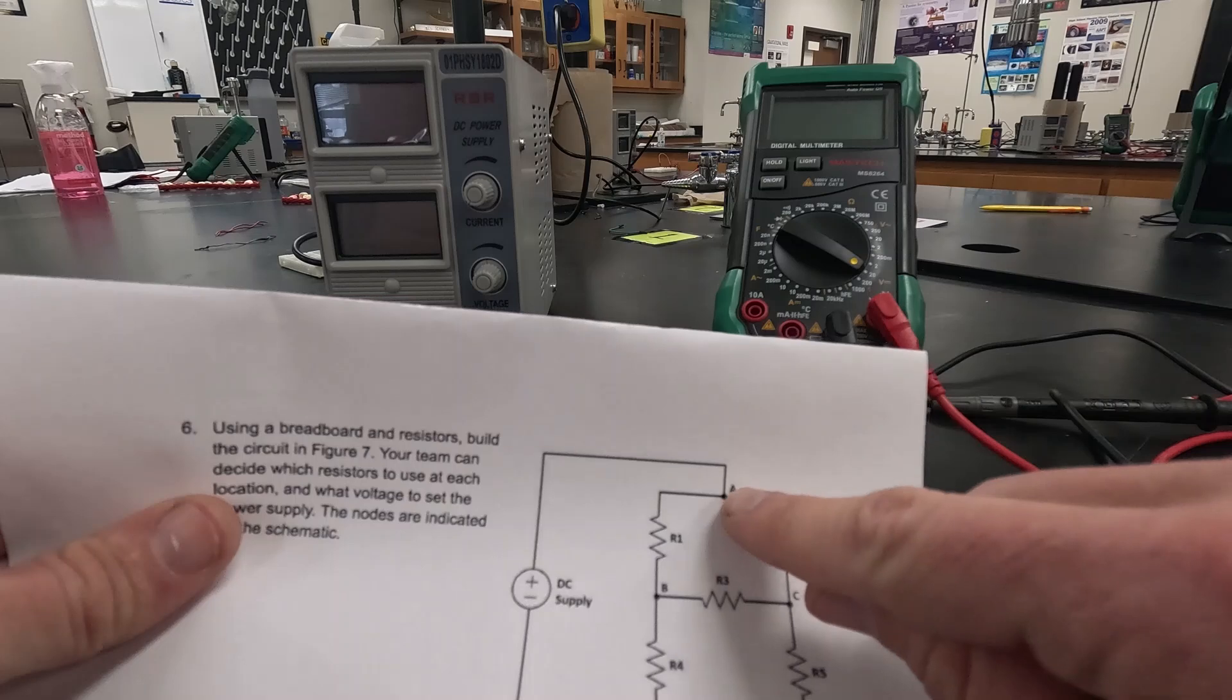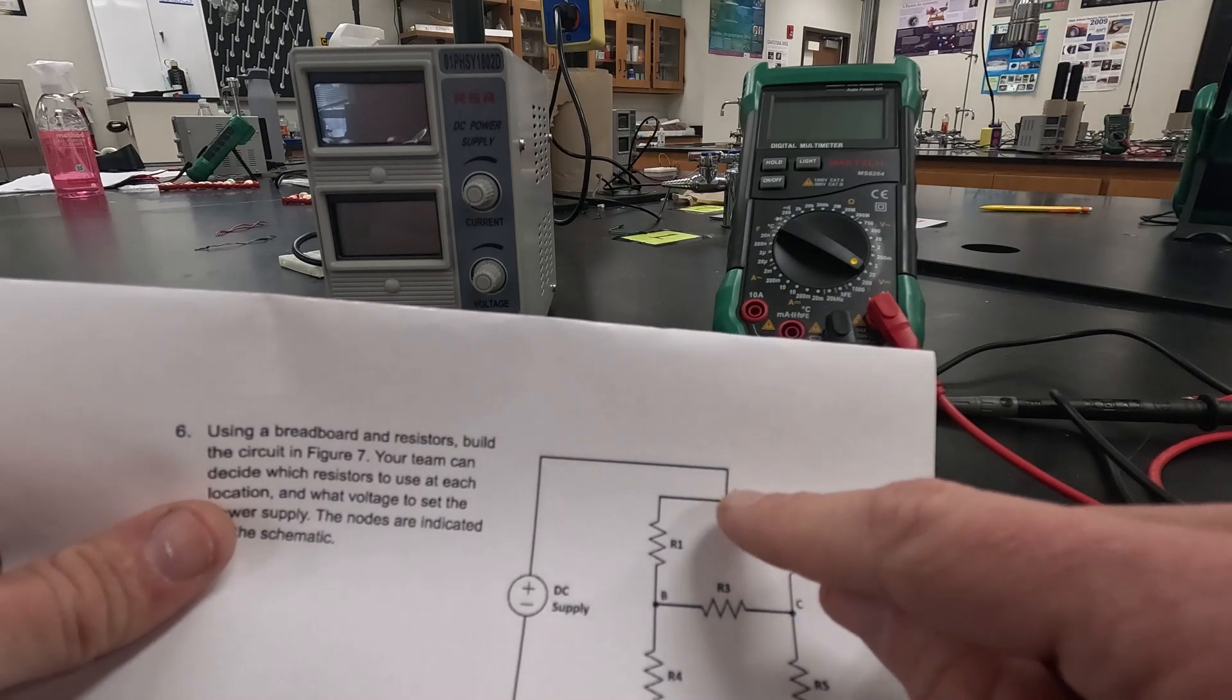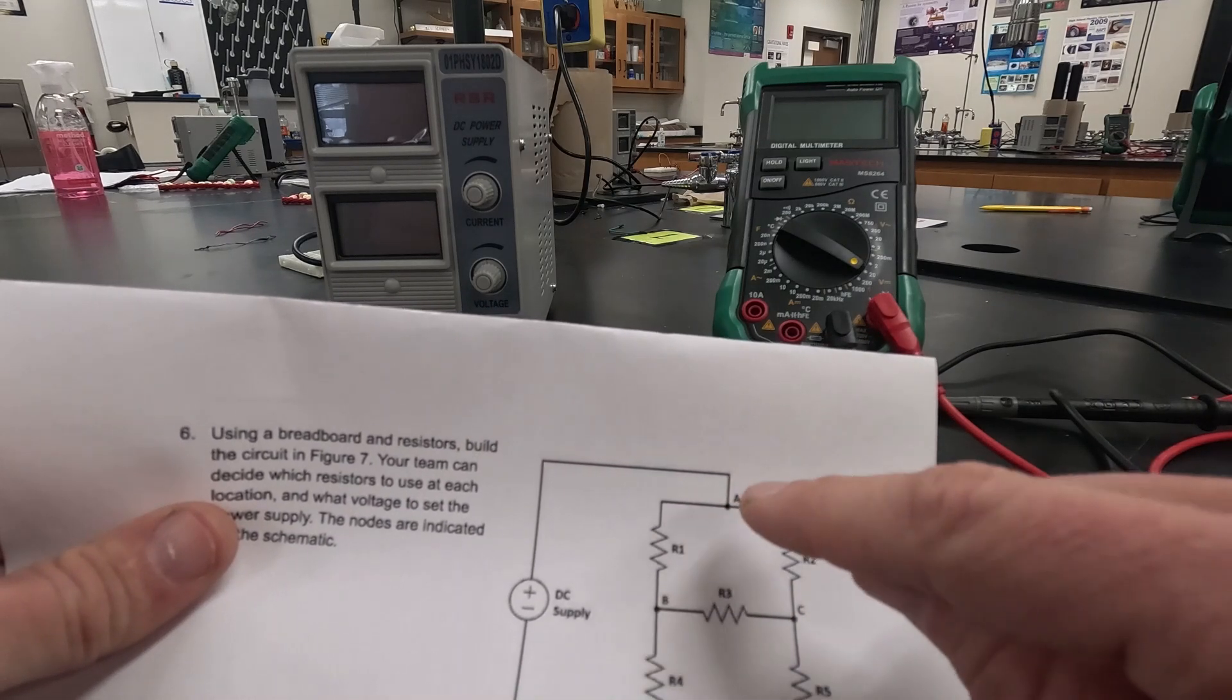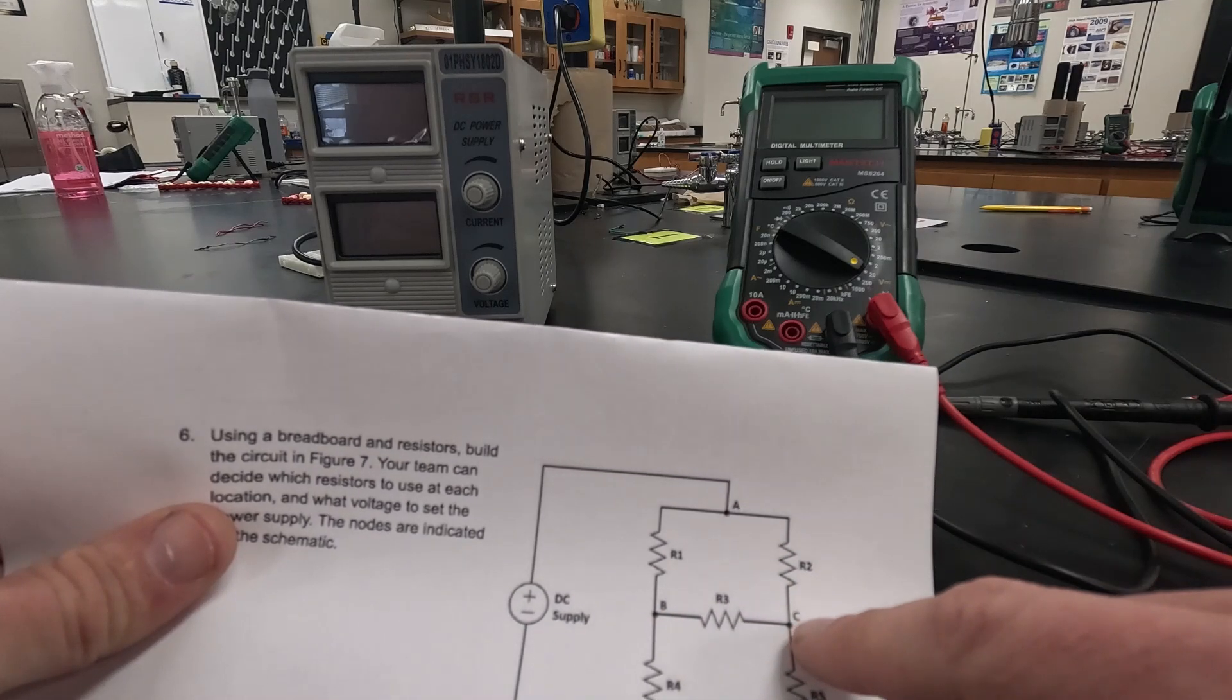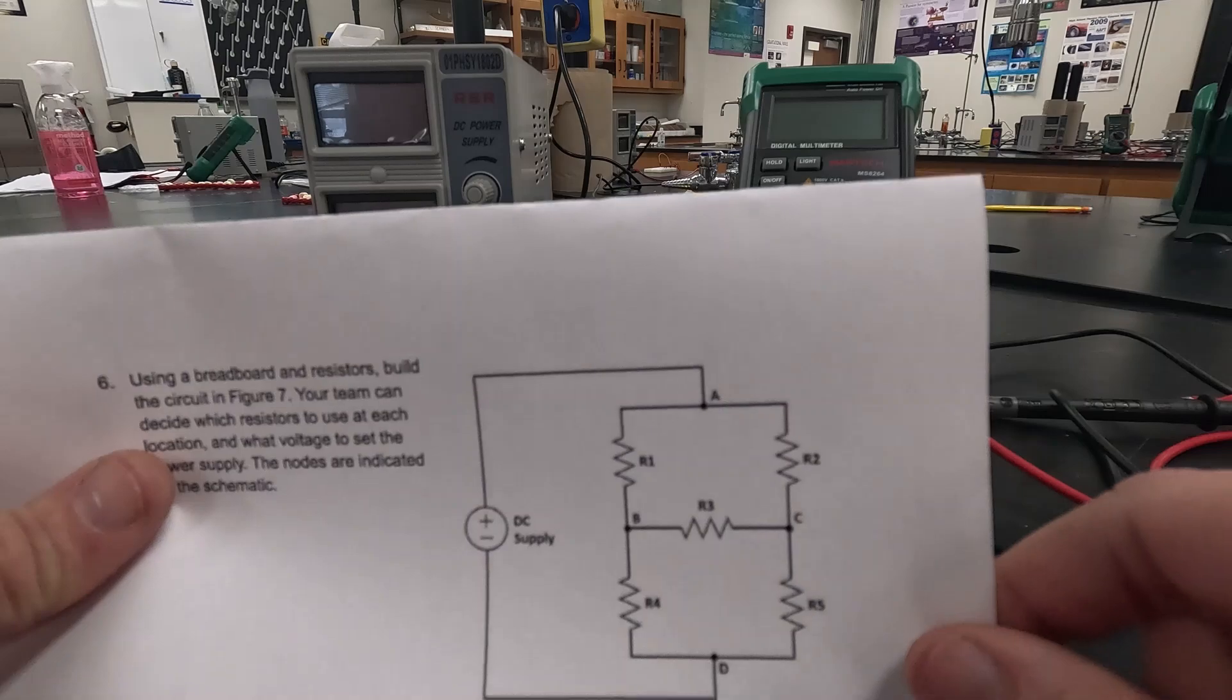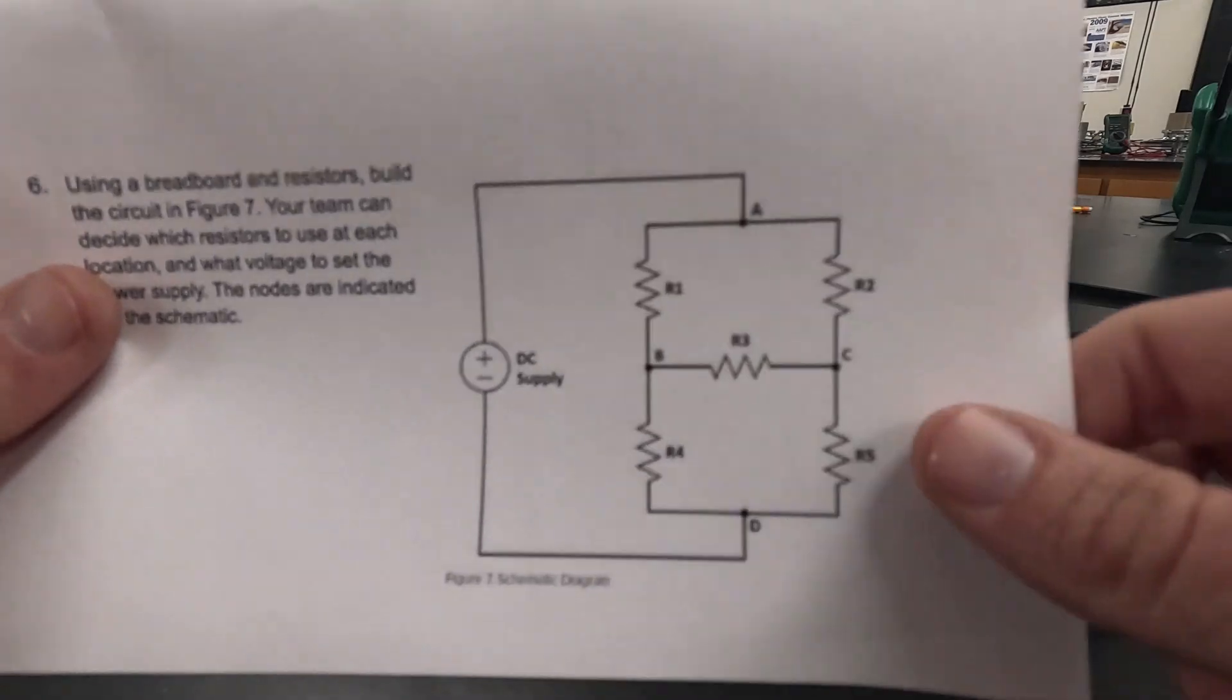Essentially each one of these nodes is going to be a different row on our breadboard. Node A is going to be one row, node B a second row, node C a third row, and node D a fourth row. So we're going to end up using four rows on our breadboard.